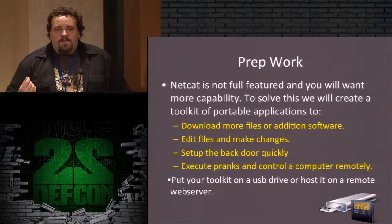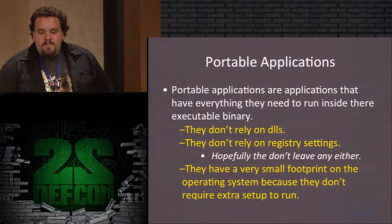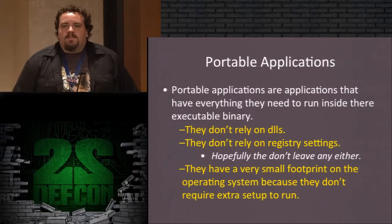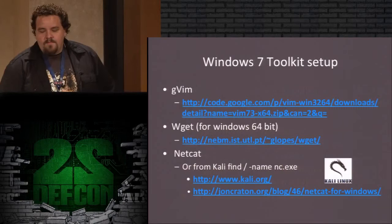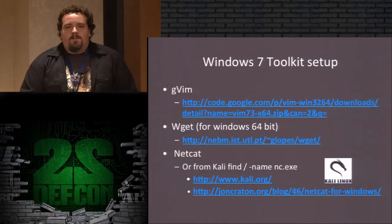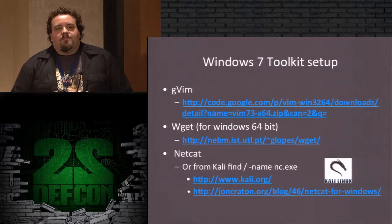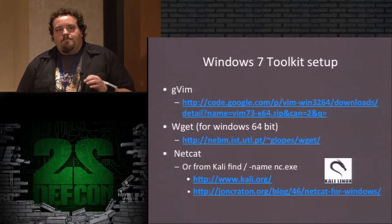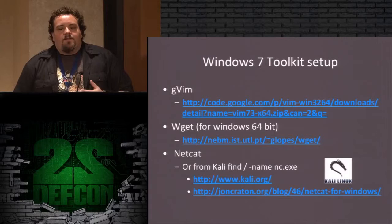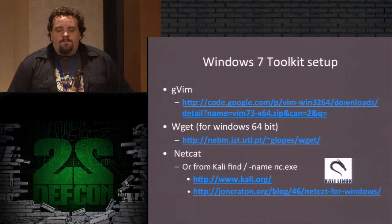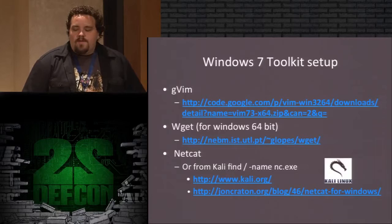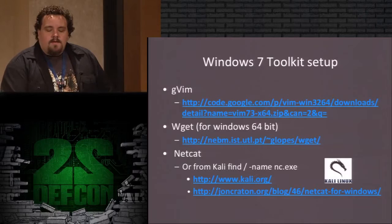You want to make sure you either have those files on a USB drive or somewhere on the internet you can quickly download them. You also want to look for portable applications — applications that don't require any DLLs, don't require any setup process; you just put them on the computer and run them. My basic toolkit for Windows 7 includes GVIM, WGit for downloading through the command line, and netcat sourced from the Kali Linux image. There are all links provided for that.